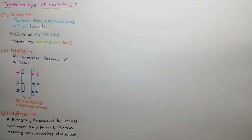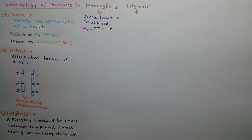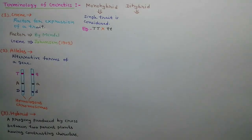Hybrid is a progeny produced by a cross between two parent plants having different contrasting characters. Hybrid is divided into two categories: monohybrid and dihybrid. In a monohybrid cross, contrasting characters of a single trait are considered, for example TT × tt.